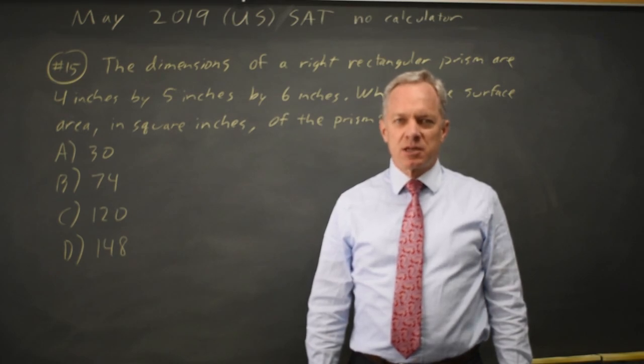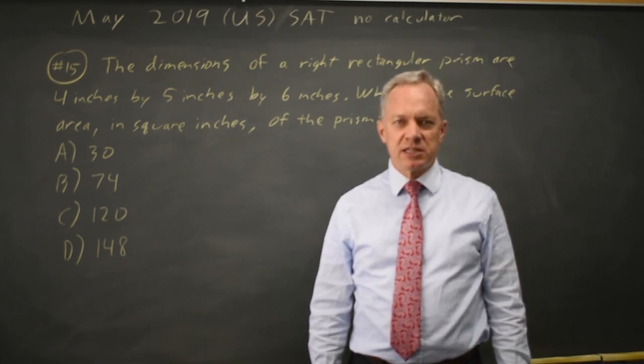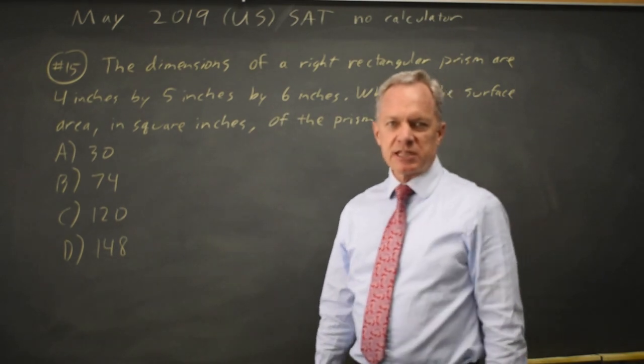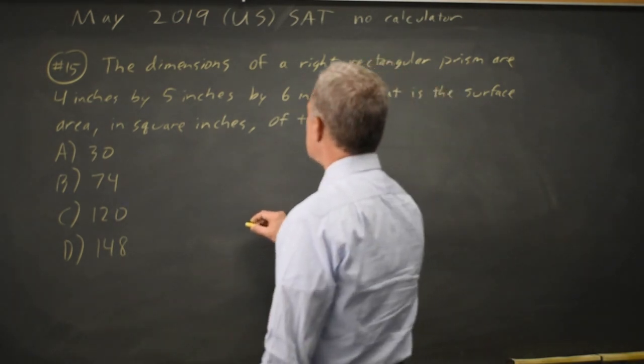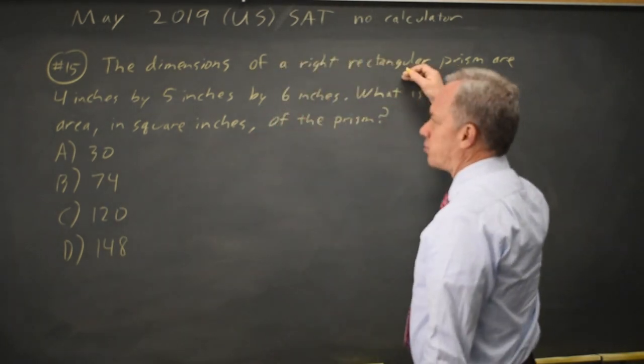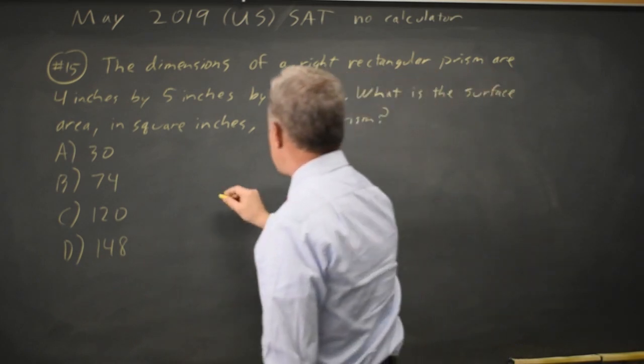This is non-calculator question number 15 from the May 2019 US exam. The College Board is asking about three-dimensional geometry. We have a right rectangular prism. I'm going to call it a box.